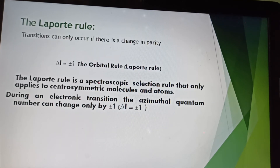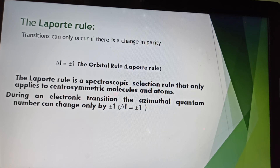The second selection rule is the Laporte rule. According to the Laporte rule, a transition can only occur if there is a change in parity, so ΔL is equal to +1 or −1. It is also called the orbital rule. The Laporte rule is a spectroscopic selection rule that only applies to centrosymmetric molecules and atoms. During an electronic transition, the azimuthal quantum number can change only by +1 or −1; that is why we write ΔL = ±1.